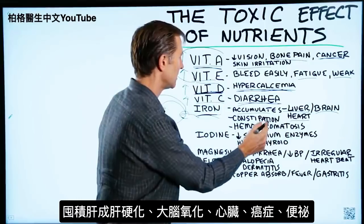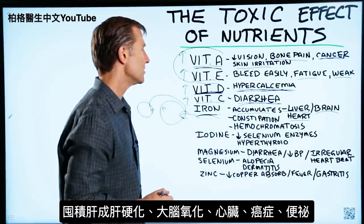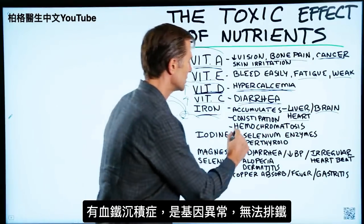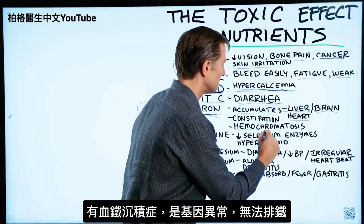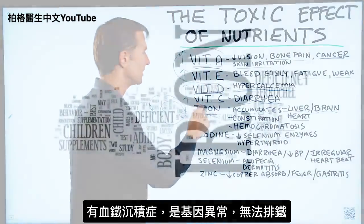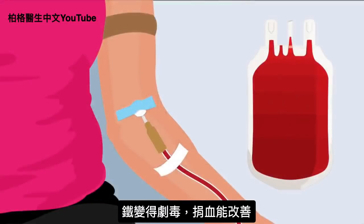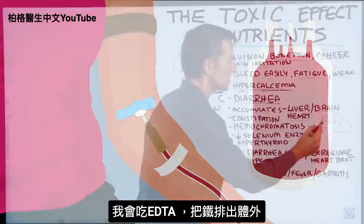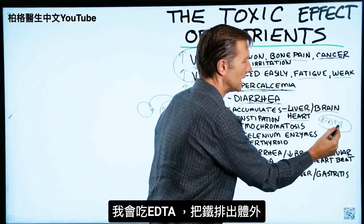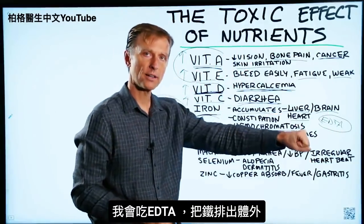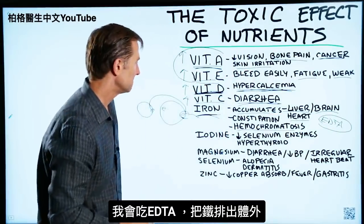Excess iron can cause constipation. There is also a condition called hemochromatosis — a genetic disorder where you can't get rid of iron, and it becomes very toxic to your body. People with this condition donate blood and feel much better. Another option is EDTA, a chelator that can help pull iron out of the body.